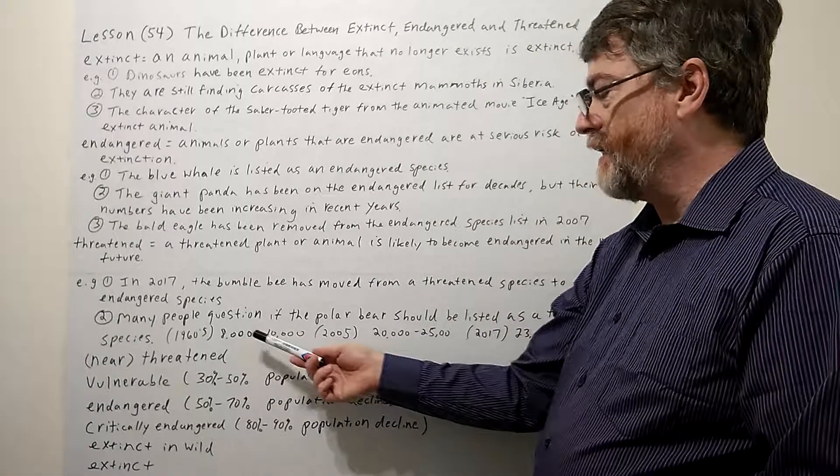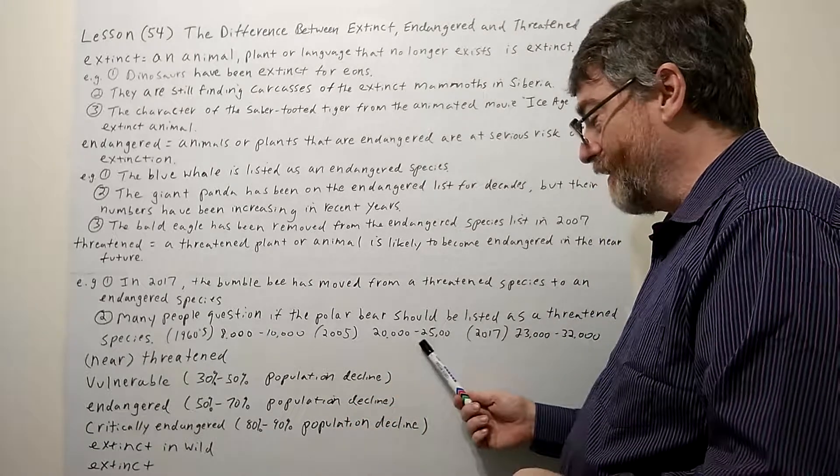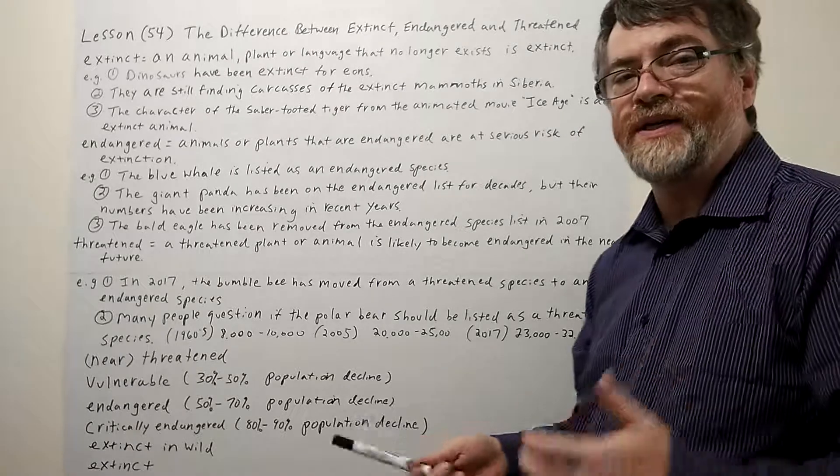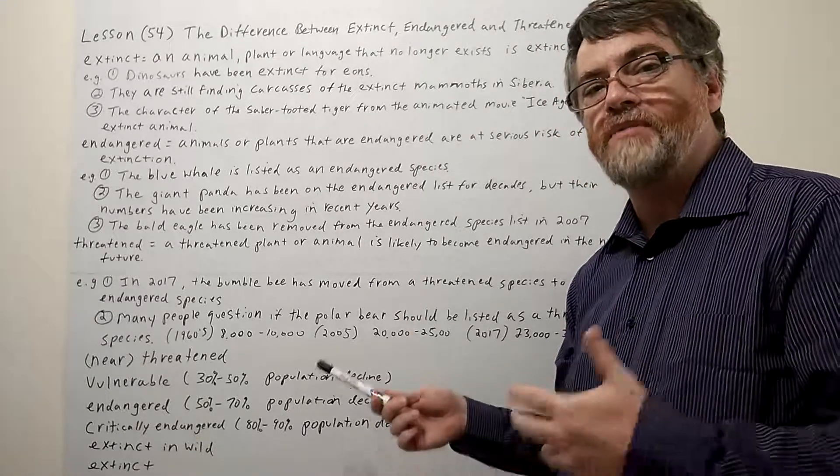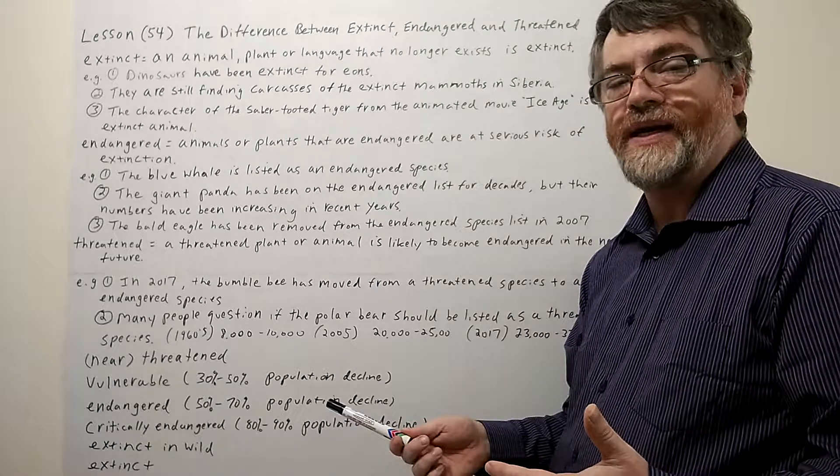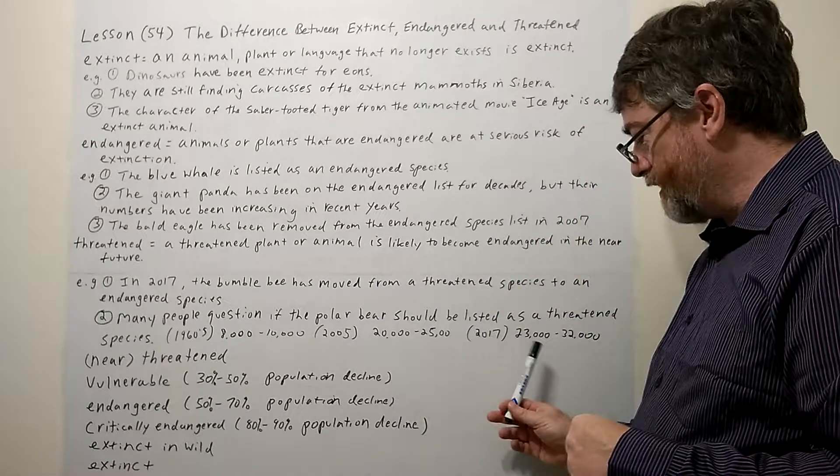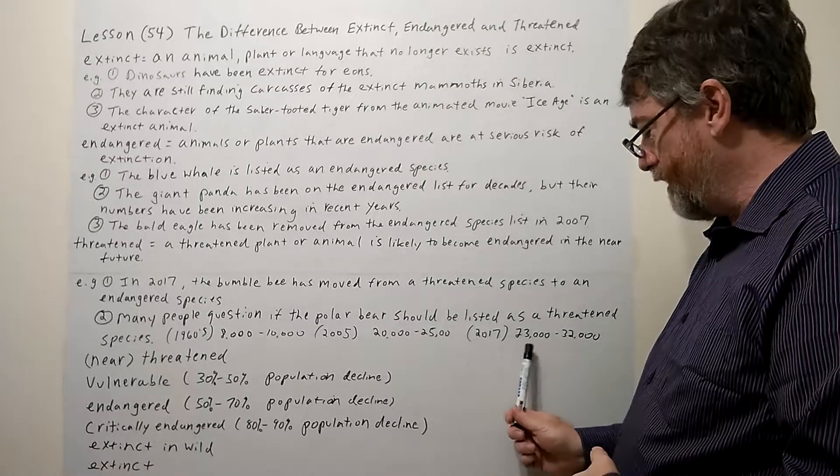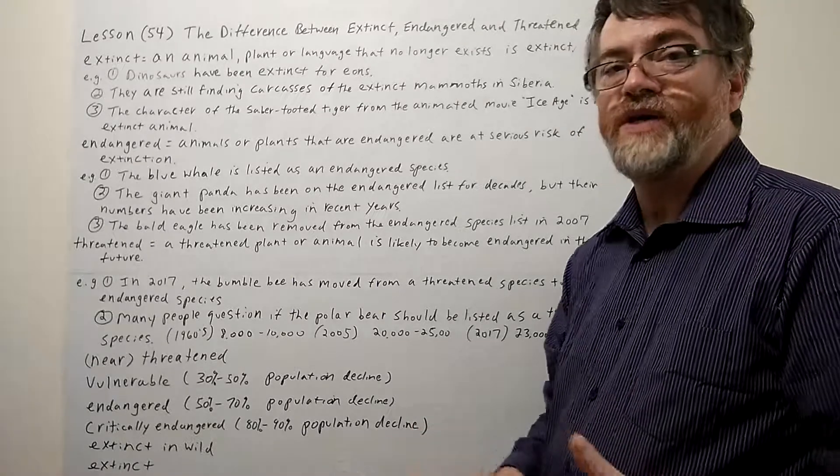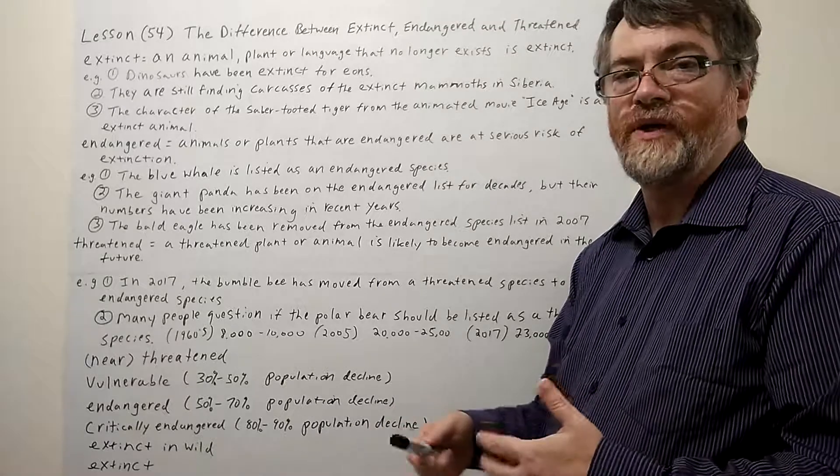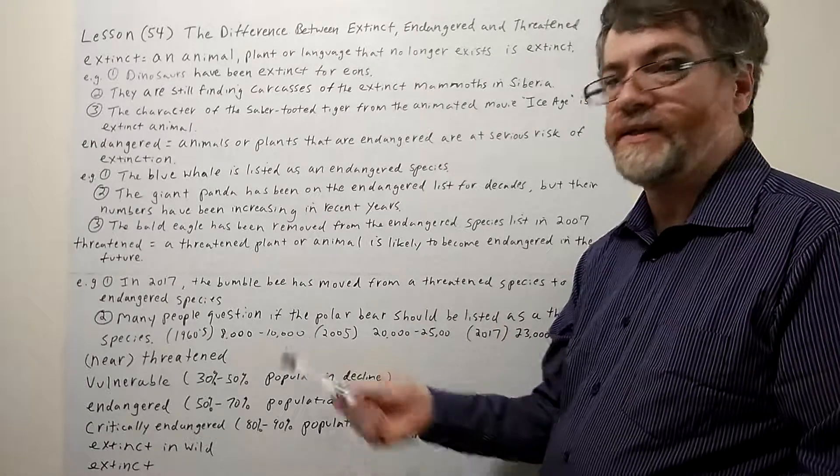I think in the 1960s they counted, they estimated there was between 8,000 and 10,000 polar bears. In 2005 when they put them on the list, the number was already double - it was 20 to 25,000 estimate at that time. So even at that time in 2005 when they put them on the list, it was higher than it had ever been in the whole 20th century. And recently when they've checked, recently 2017, the numbers again have grown. So now it's estimated there's anywhere between 23,000 and 32,000. So some people question if they should be on this list at all. Now of course some people, if you believe in global warming, you might still fear that maybe they should still be there, but there's a lot of people who question it.